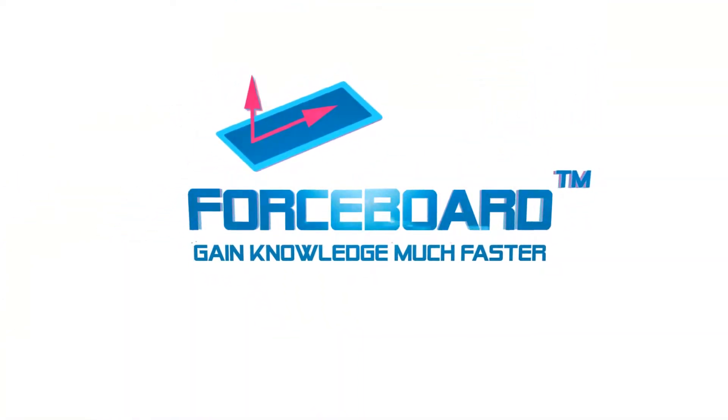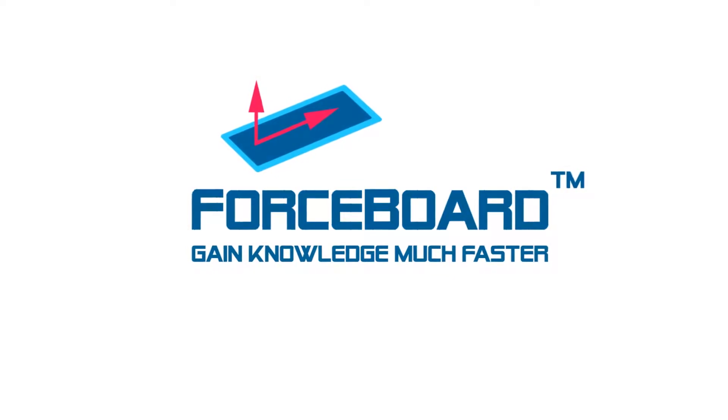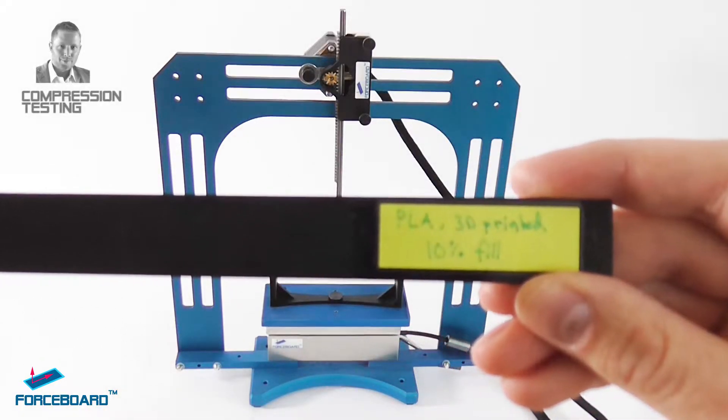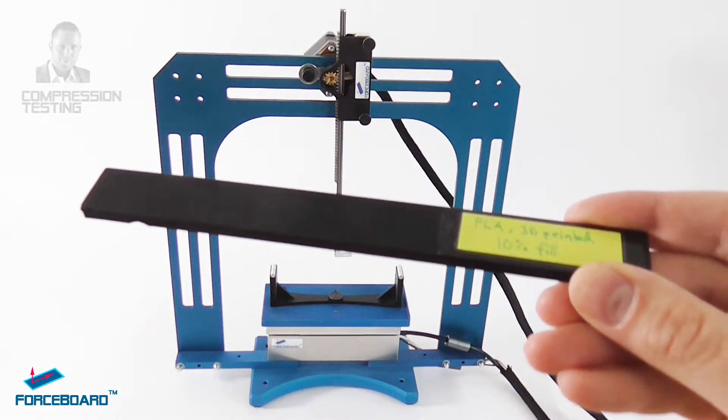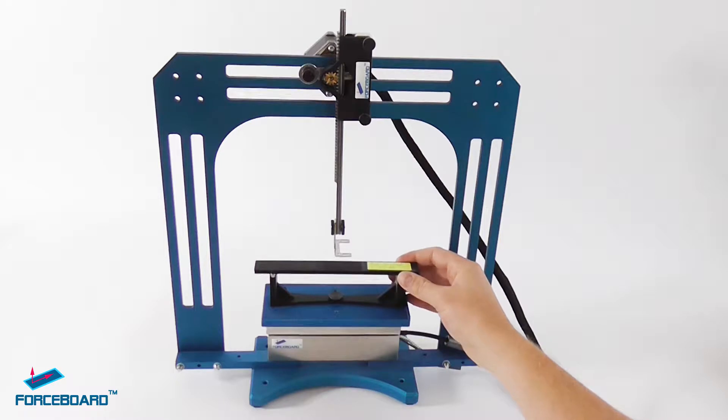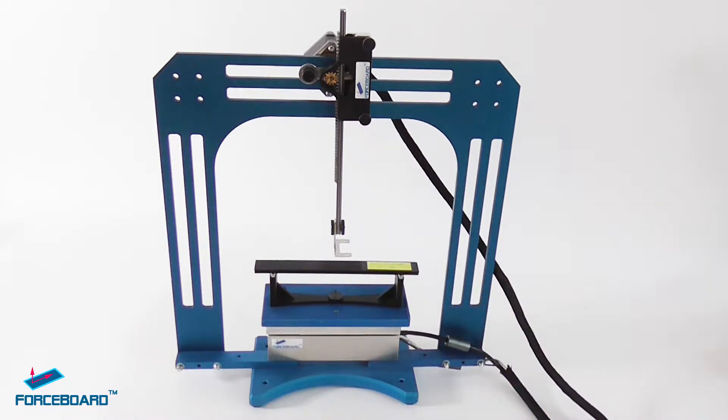Now we're going to take a look at a compression test example where we use a 3D printed polylactic acid beam with a 10% infill. We're going to let the Force Board automatically detect the flexural modulus of this 3D printed plastic beam.